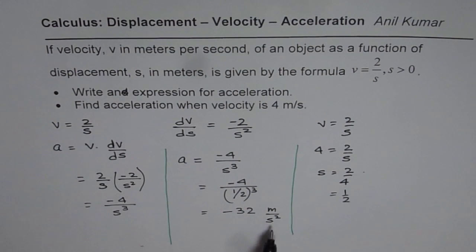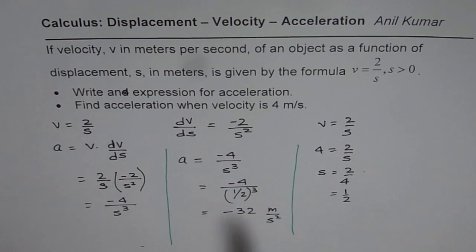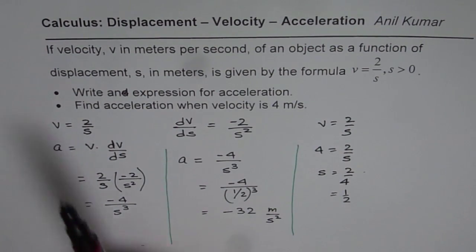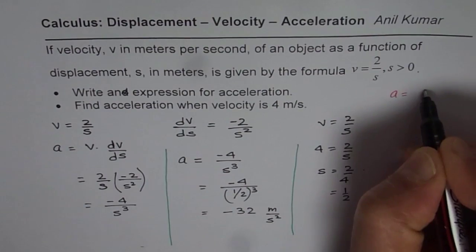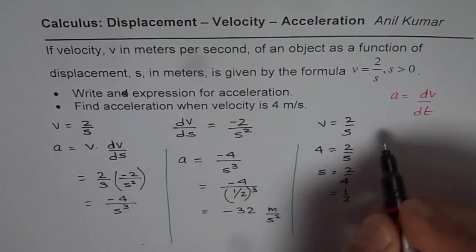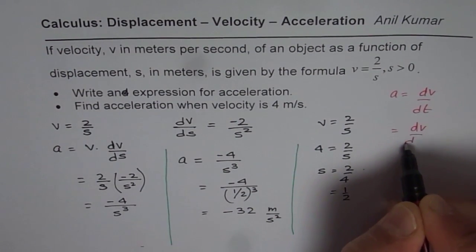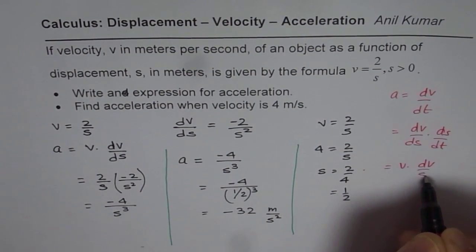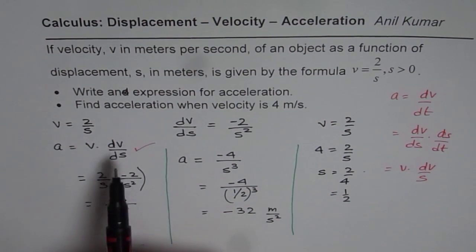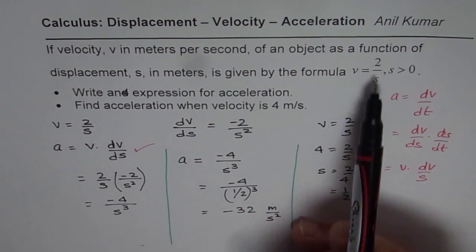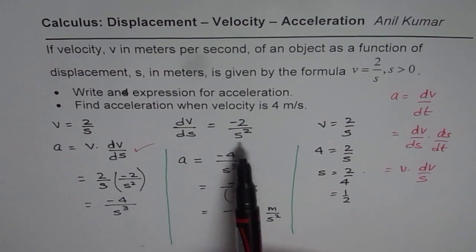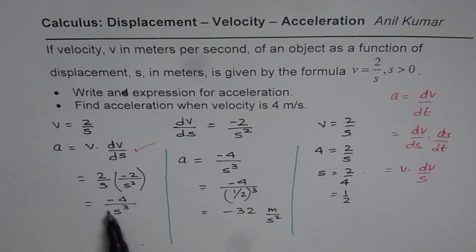When you calculate, you get minus 32 meters per second squared as your solution. The first step is to find acceleration when we are given displacement. Recall that acceleration really equals dv over dt, which can be written as dv/ds times ds/dt. Since ds/dt is velocity, we can write v times dv/ds. That is how we get this formula. dv/ds is calculated from the given equation, giving minus 2 over s squared, and substituting that value gives our formula for acceleration.